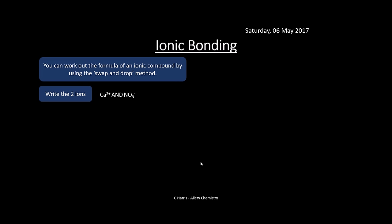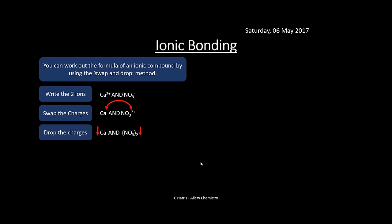We can work out the formula of an ionic compound using the swap and drop method. First, write down your two ions — in this case calcium ion and nitrate ion. Then swap the charges over: the two moves to the nitrate and the minus moves to the calcium. Then drop the charges (including the plus and minus) so they become subscripts.